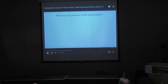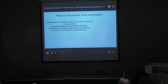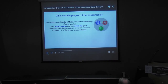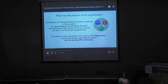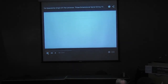What was the purpose of the experiments? According to the standard model, the proton is made up of three quarks — two up quarks and one down quark. The total mass of these quarks, however, accounts for only 1% of the proton's measured mass. The purpose of the experiments was to discover the Higgs boson, a particle presumed to provide the proton with the missing 99% of its mass. Where is the remaining mass of the proton coming from?